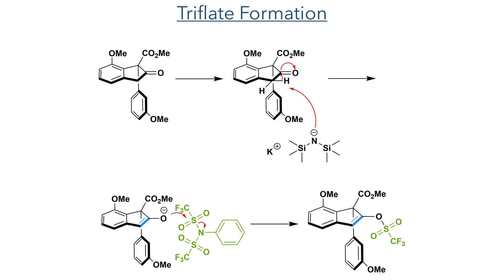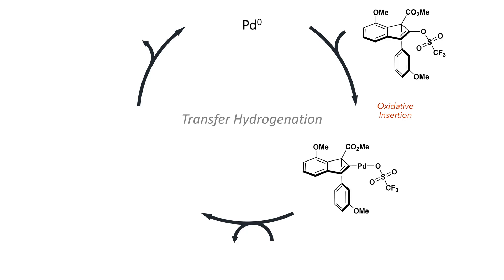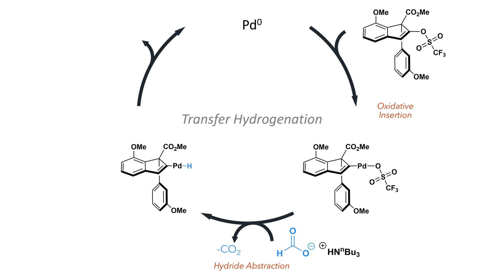With the triflate formed, they could then proceed to carry out a transfer hydrogenation. This proceeds by the oxidative insertion of a palladium(0) catalyst into the oxygen-carbon bond. The reaction of an ammonium formate salt with this complex transfers a hydride to the palladium centre, together with the elimination of carbon dioxide gas. Beta-hydride elimination then transfers this hydride to the substrate and regenerates the palladium(0) catalyst.